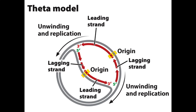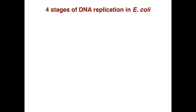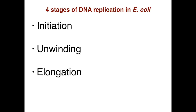In the theta model there is an origin and leading and lagging strands, and there is unwinding of the DNA to allow replication to occur. There are four stages of DNA replication in E. coli, which also applies to eukaryotes: initiation, unwinding, elongation, and termination.